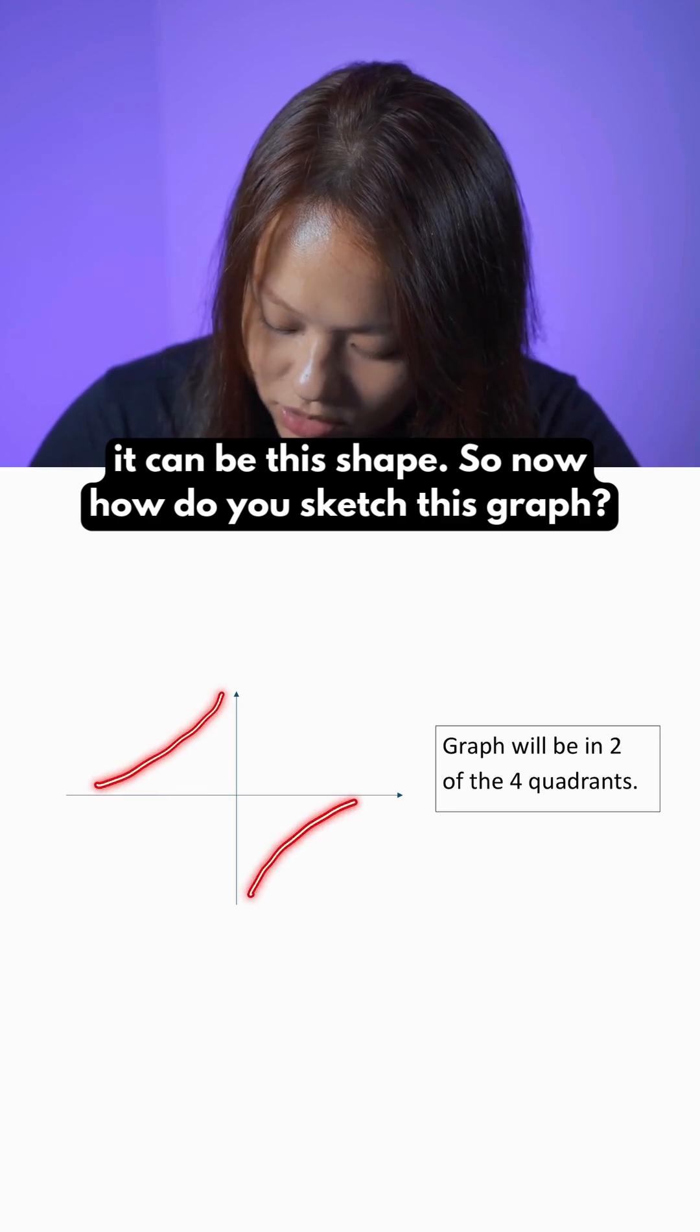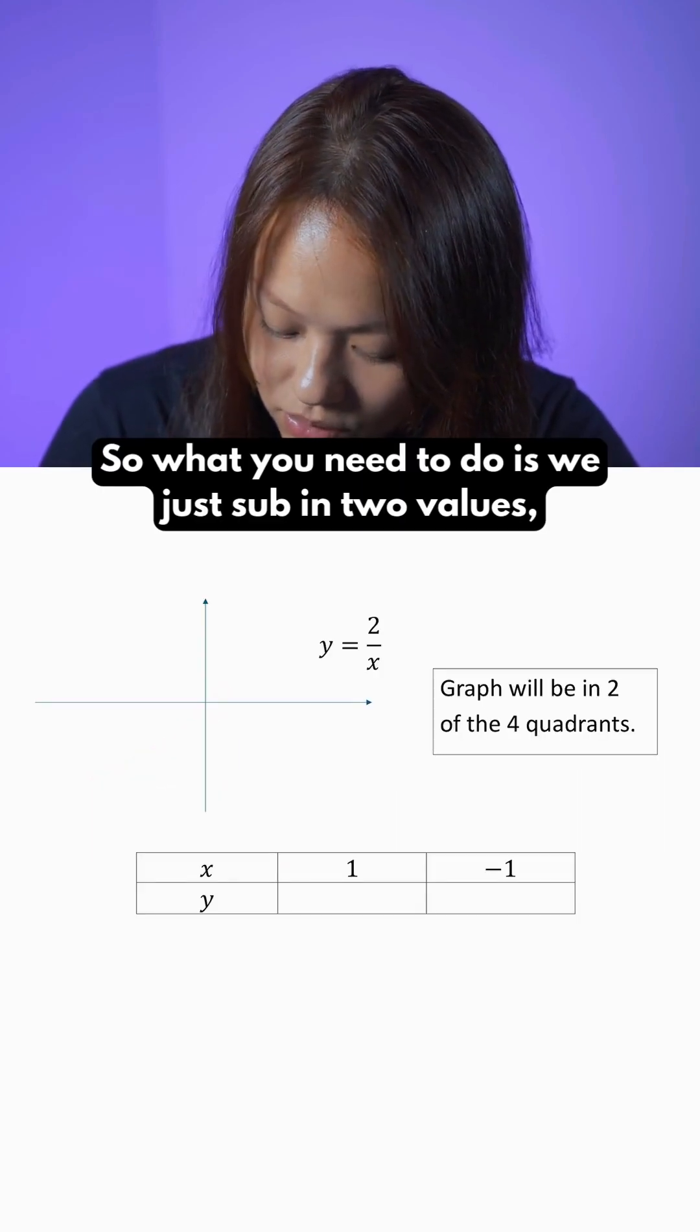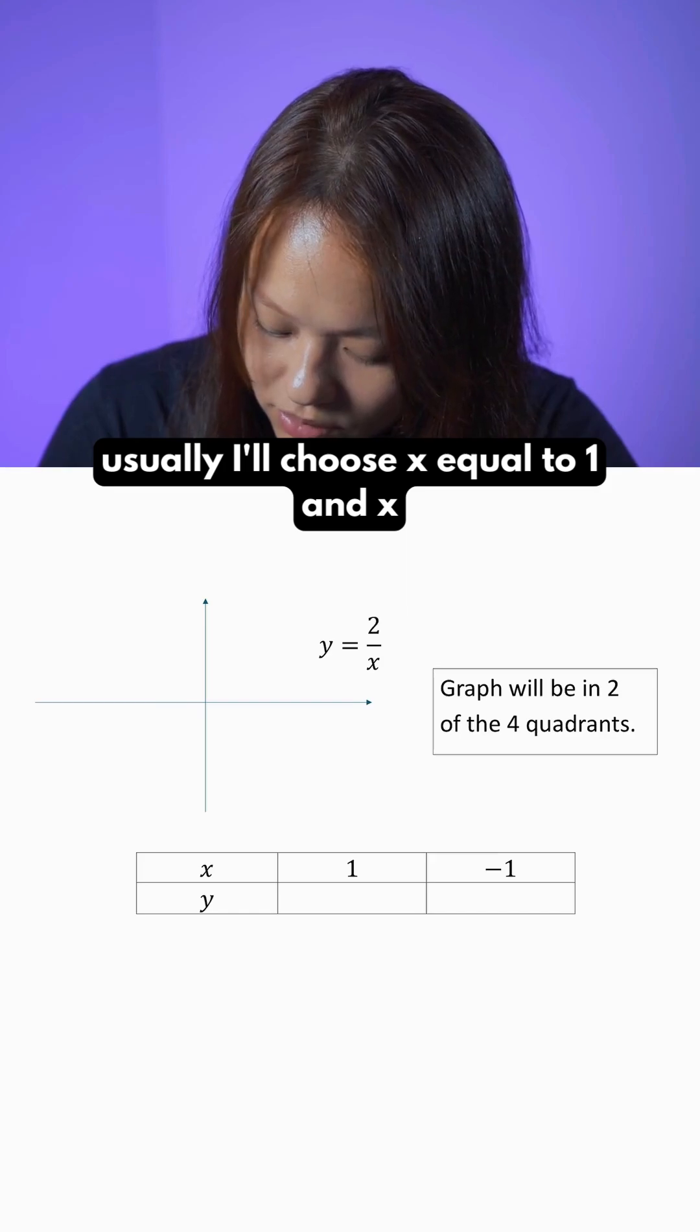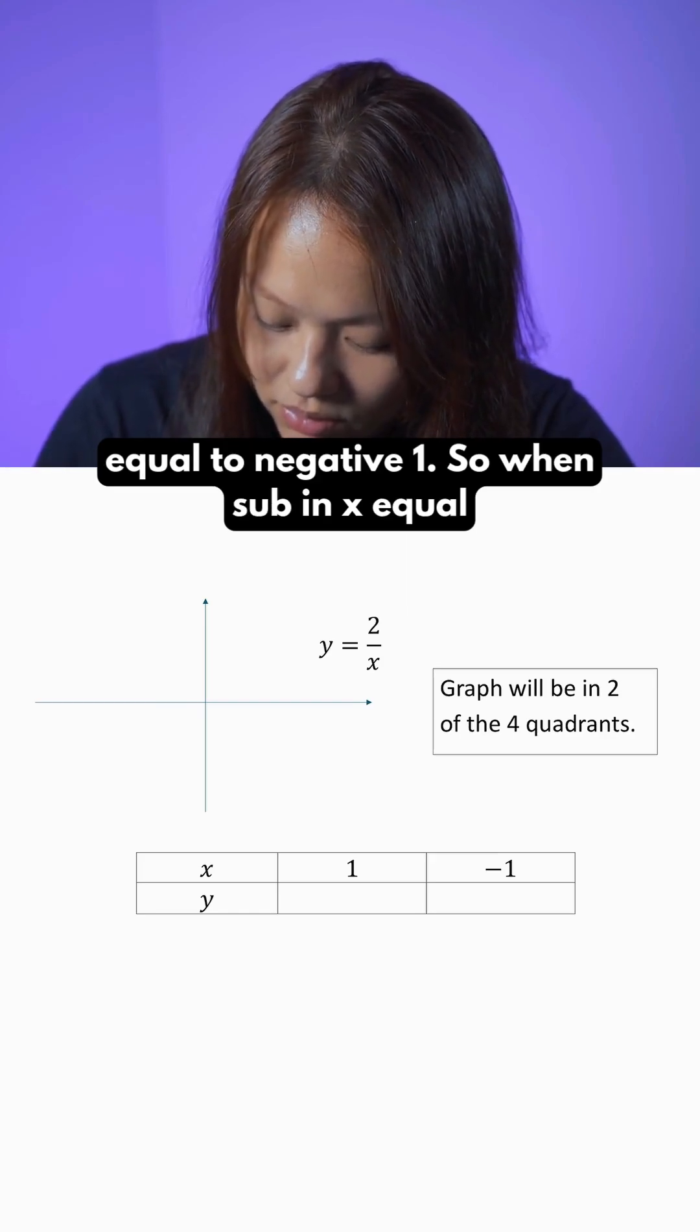So now how do you sketch this graph? What you need to do is just sub in two values. Usually I'll choose x equal to 1 and x equal to negative 1.